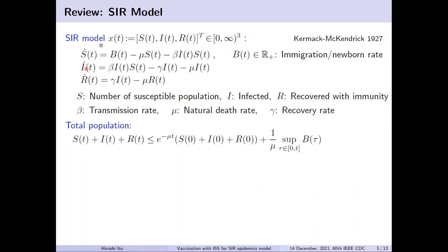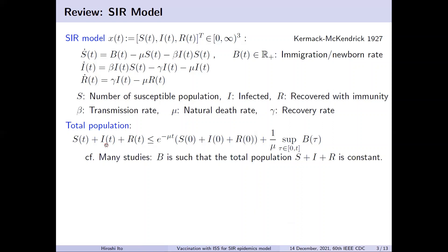From these equations, it is clear that the total population decays exponentially, plus the contribution of immigration. I would like to stress that in the literature, it is often assumed that B is not only a constant, but an artificial constant that guarantees the total population to be constant. But here, in this study, the immigration B is exogenous and an unknown function of time.